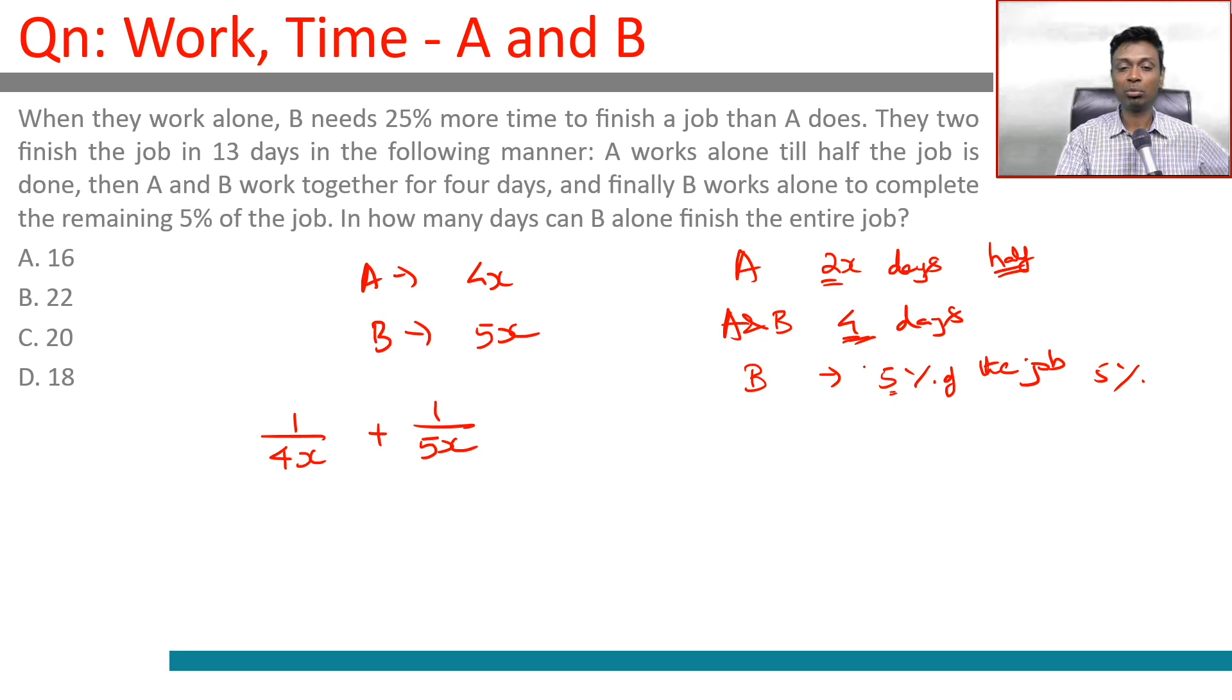B takes 5x days to complete the entire job. To complete 5% of the job, B will take 5x times 1/20, which is x/4 days.